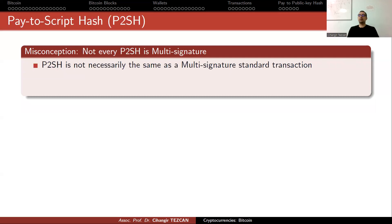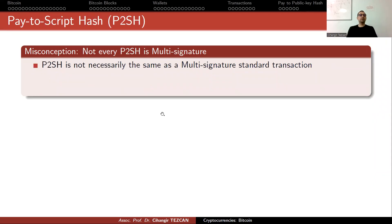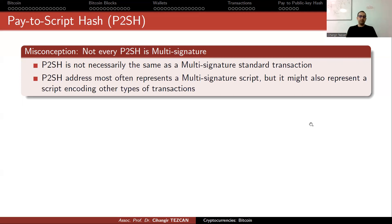The misconception is that not every pay-to-script hash is multi-signature. Some people use it for multi-signatures because if you use a multi-signature in the traditional sense, the sender has to include all of those signatures, resulting in a very long transaction and higher fees. Instead, you write the script yourself, take the hash, and simply tell the sender to send money to this address. Pay-to-script hash address most often represents a multi-signature script, but it might also represent a script encoding other types of transactions, and we will show an example for the SHA-1 collision.